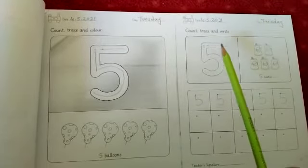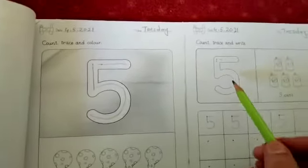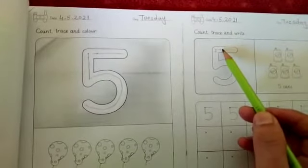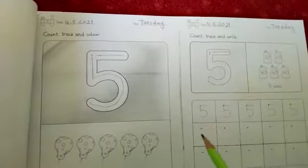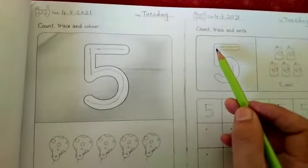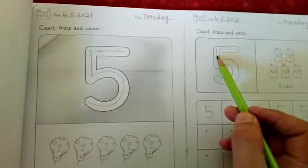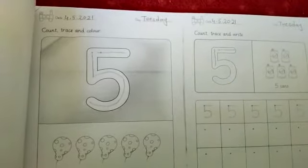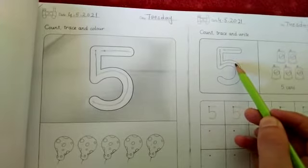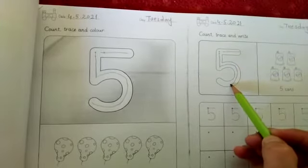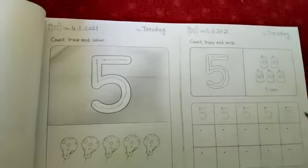Then trace 5 number. Trace first sleeping line, this is sleeping line, then standing line, this is standing line, and then curve line. This is curve line.